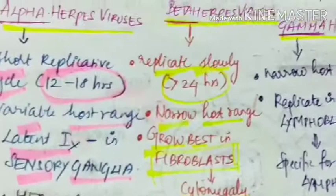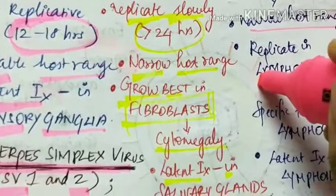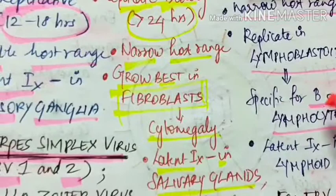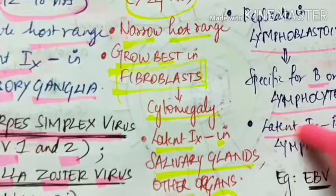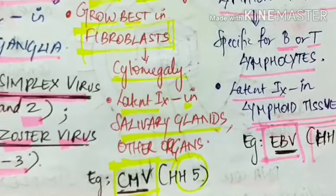Gamma herpes viruses also have a narrow host range. These viruses replicate in lymphoblastoid cells and are specific for B or T lymphocytes. They produce latent infection in lymphoid tissues. An example is Epstein-Barr virus, which is human herpes virus 4.